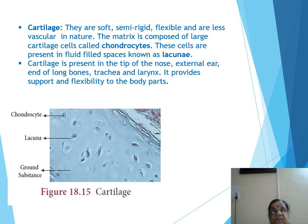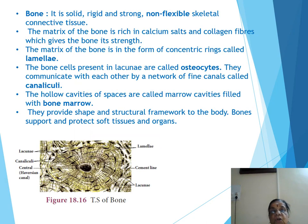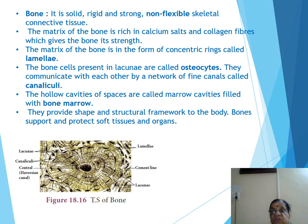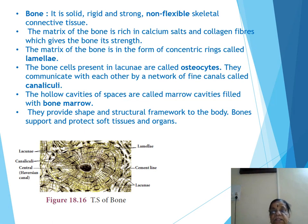The next supportive connective tissue is bone. Bone is a solid, rigid, strong, non-flexible skeletal connective tissue — a supportive tissue. The matrix of the bone is rich in calcium salts and collagen fibers, which give the bone its strength. The matrix is in the form of concentric rings called lamellae.